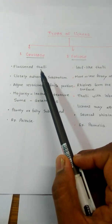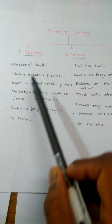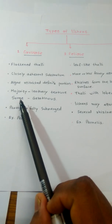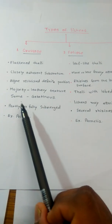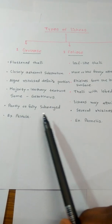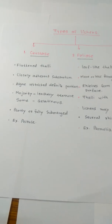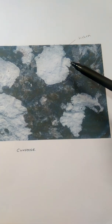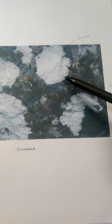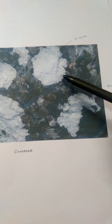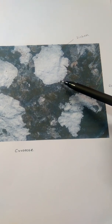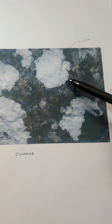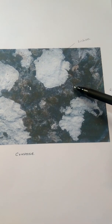Crustose Lichens: these are flattened thallus, closely adhered to the substratum, with algae restricted to a definite position, majority leathery in texture, some gelatinous, partially or fully submerged. Example: Peltula. The body structure is called a Thallus. It is very flat and submerged in the rock, so these Lichens cannot be easily differentiated because they penetrate into the rocks.